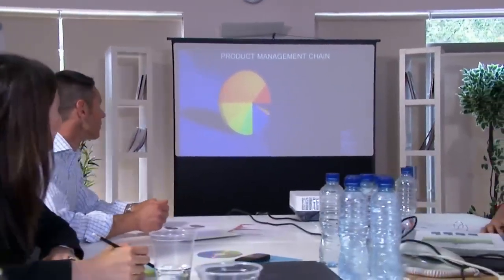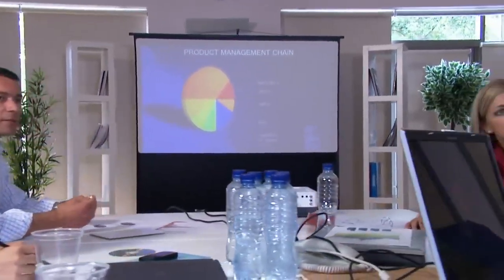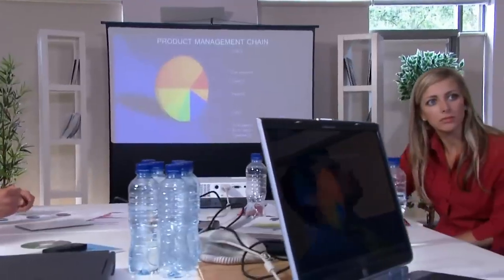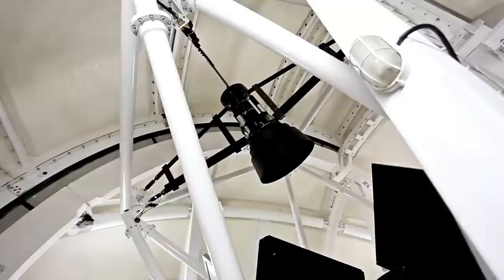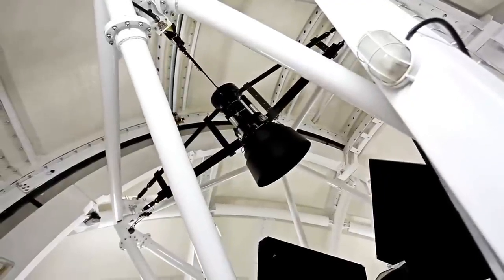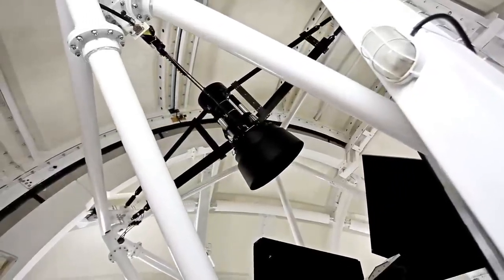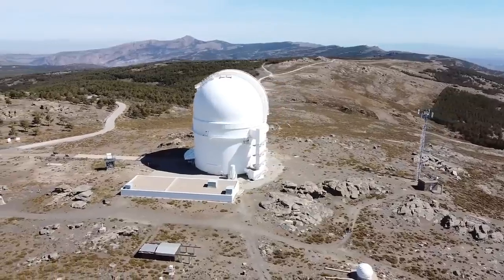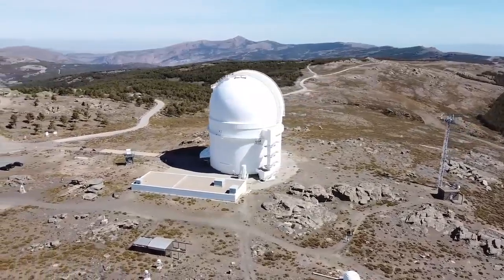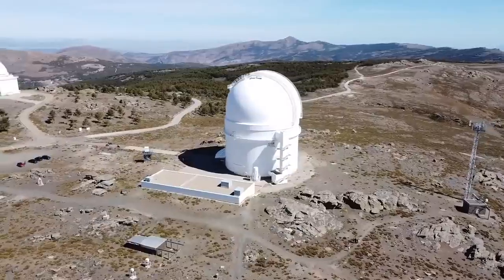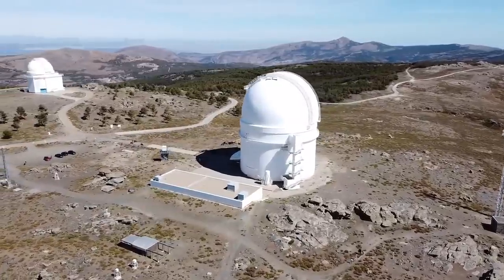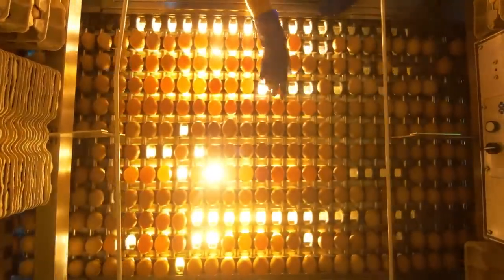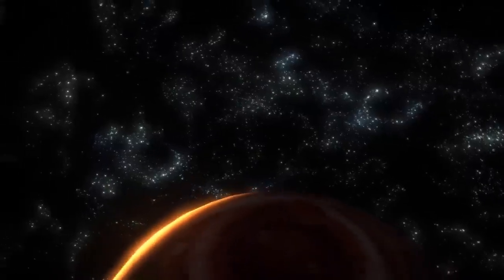In recent times, as technology has advanced and our observational tools have become more powerful, astronomers have focused their attention on one of the most captivating stars visible to the naked eye, Betelgeuse. This red supergiant, situated in the Orion constellation, has historically been among the brightest objects in the night sky, drawing the curiosity of both professional astronomers and stargazers alike. Yet it is Betelgeuse's recent erratic behavior that has sparked a surge of scientific interest.